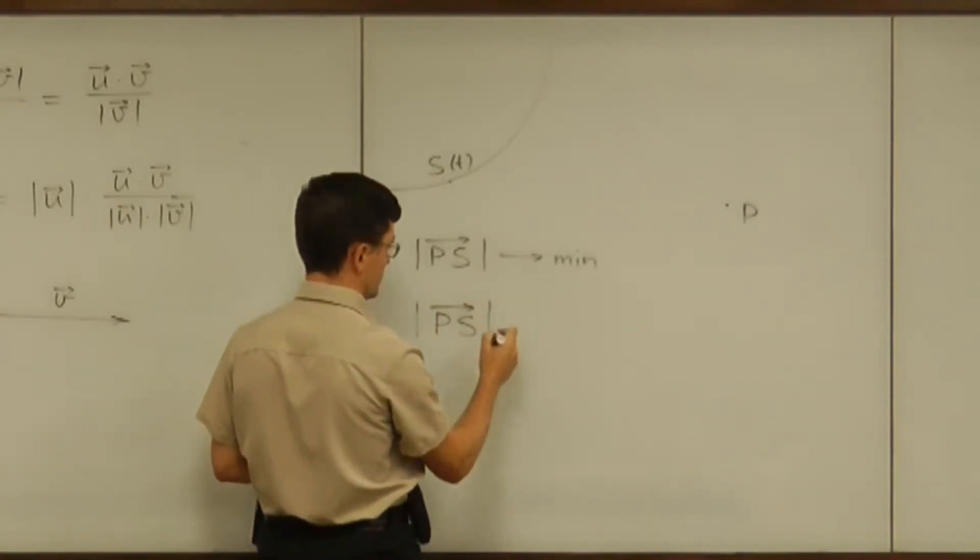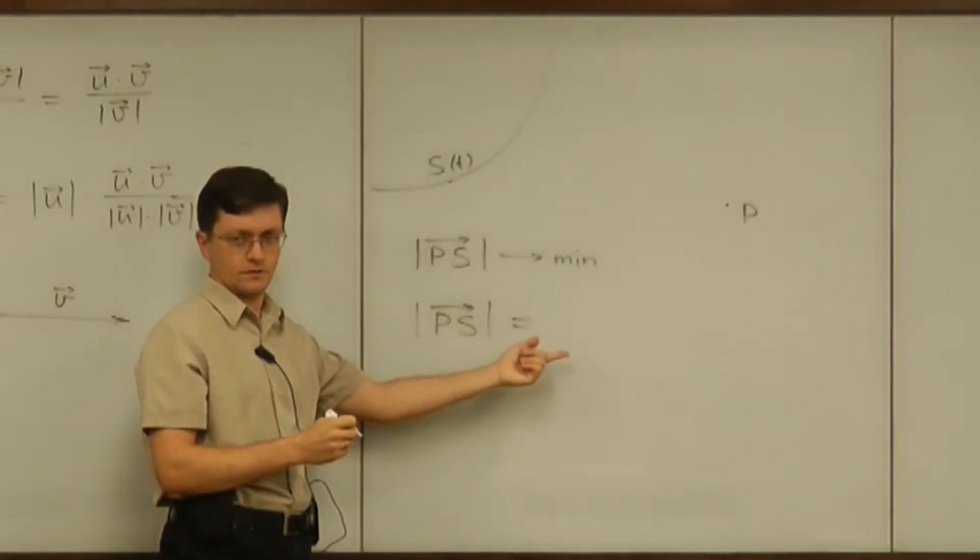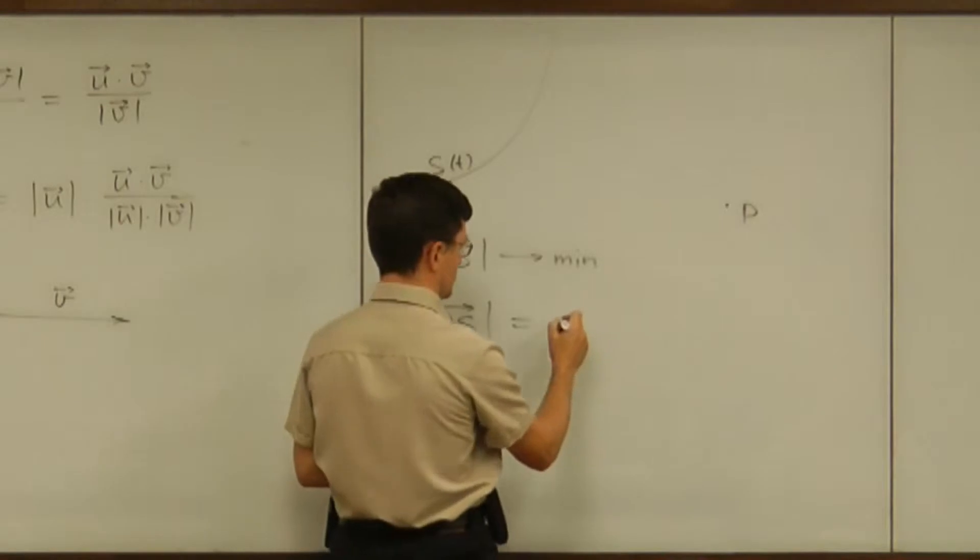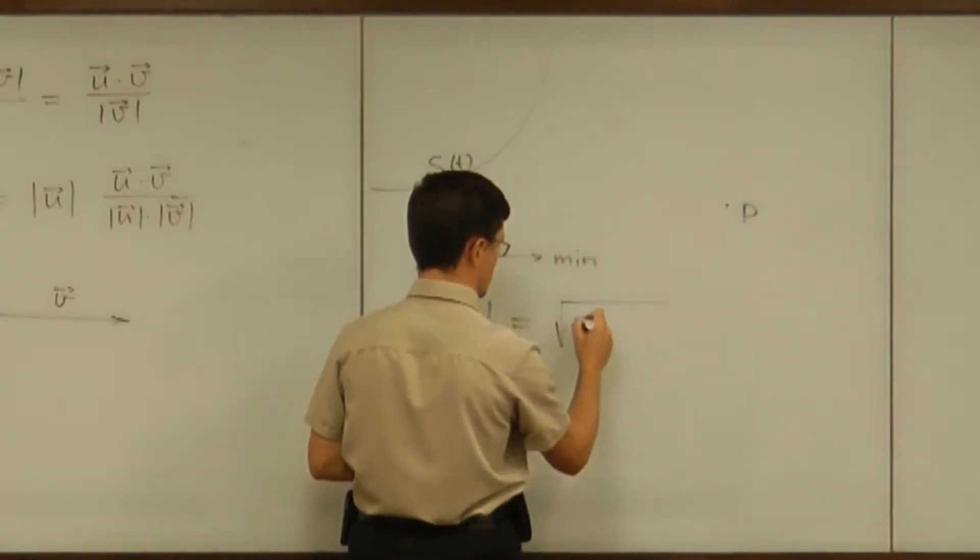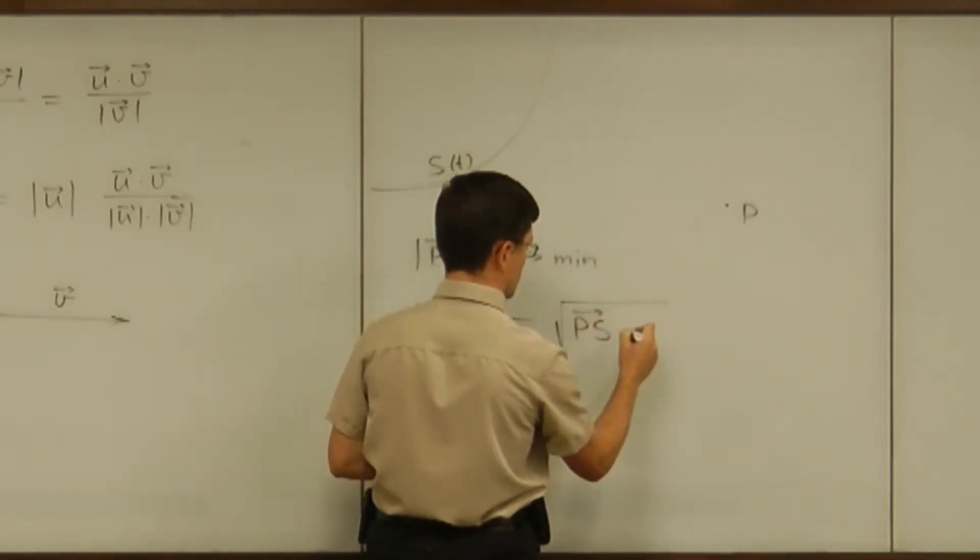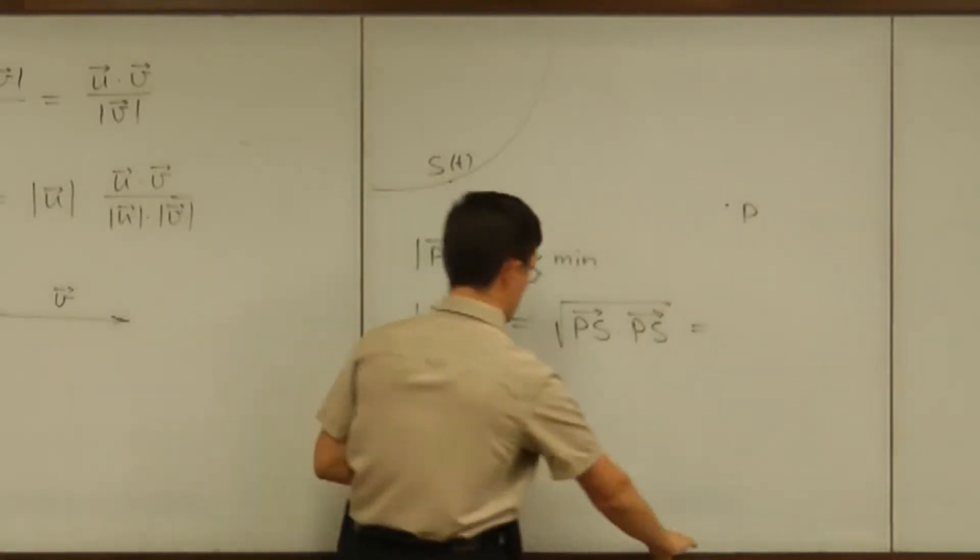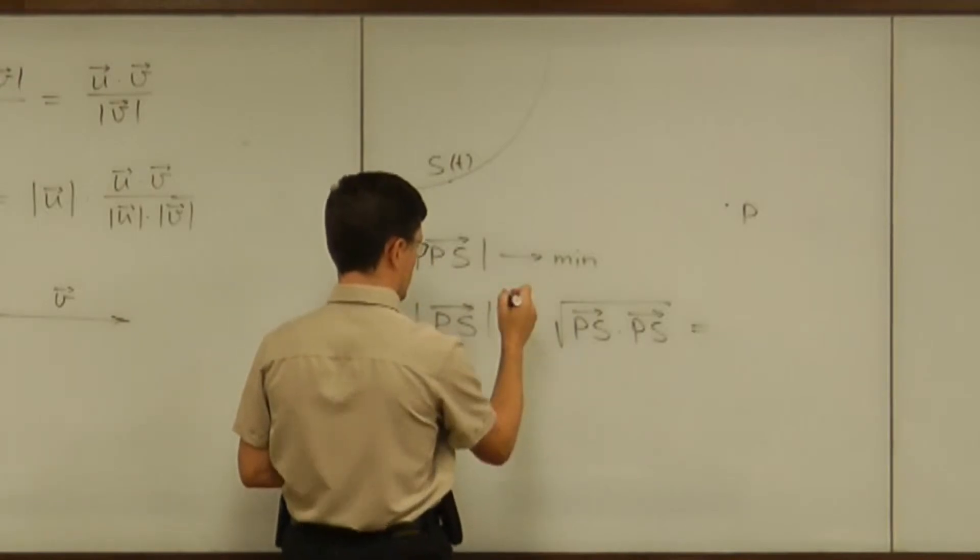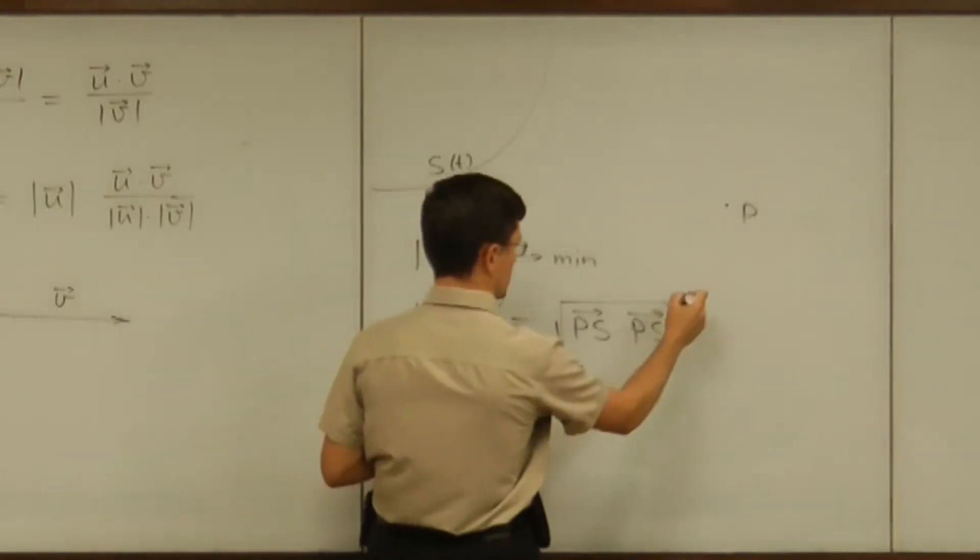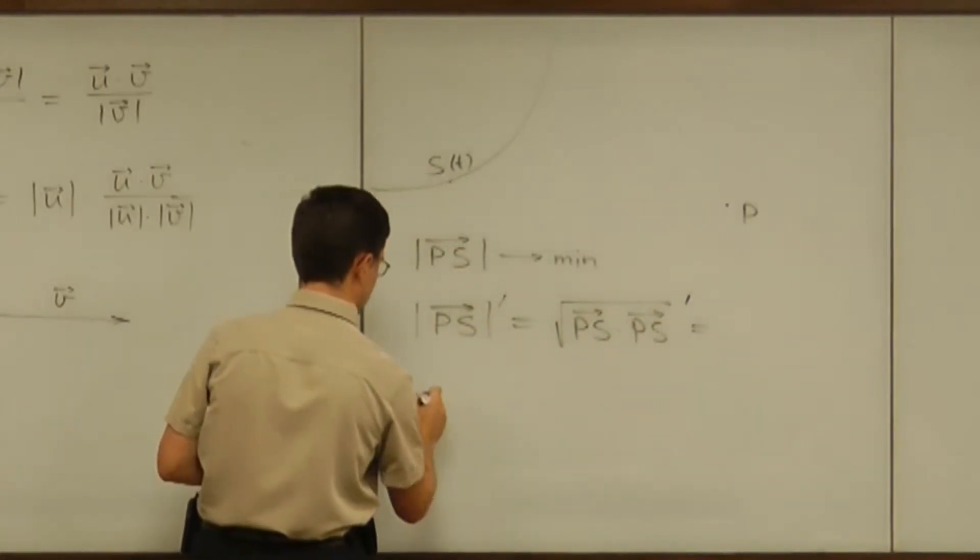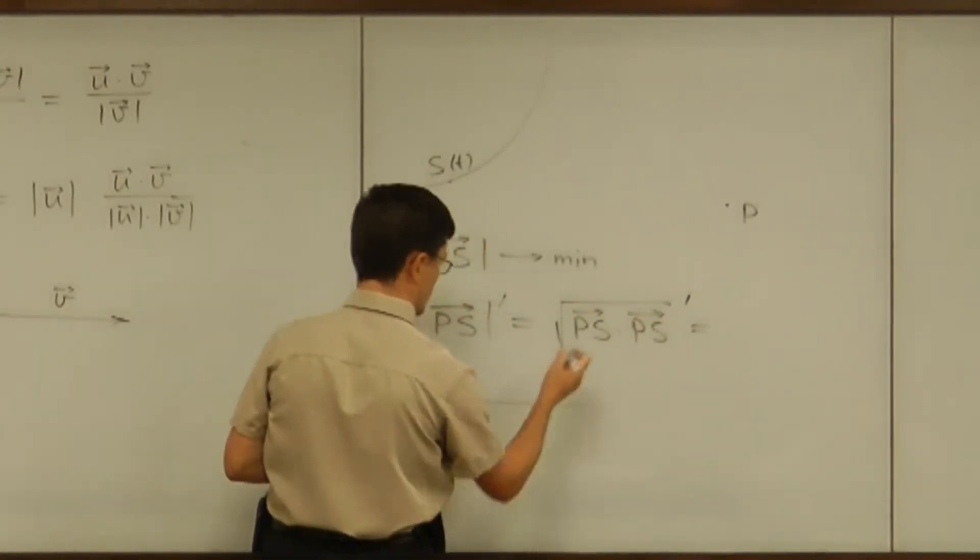We practiced already differentiating the magnitude of a vector if the vector depends on time by replacing that with something using dot product. The magnitude is the square root of PS dot PS. And if I want to differentiate that magnitude, I know how to differentiate the square root.